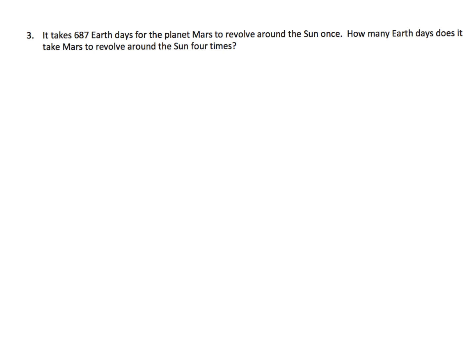We've got to practice a couple of word problems just to knock this home. It takes 687 Earth days for the planet Mars to revolve around the sun once. So how many Earth days does it take Mars to revolve around the sun 4 times? Okay, so that means we're going to take 687, and we're going to multiply by 4.